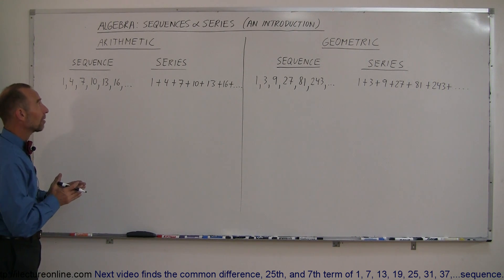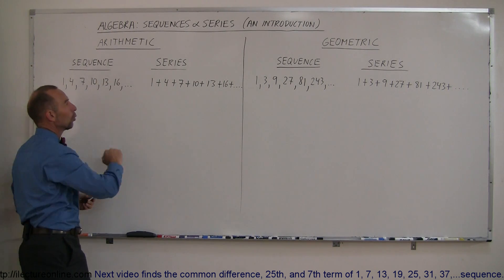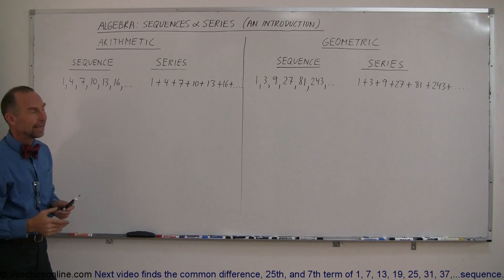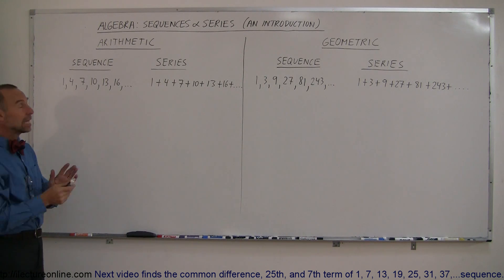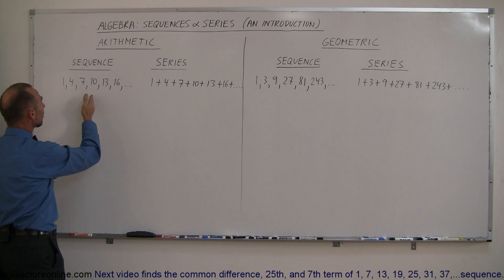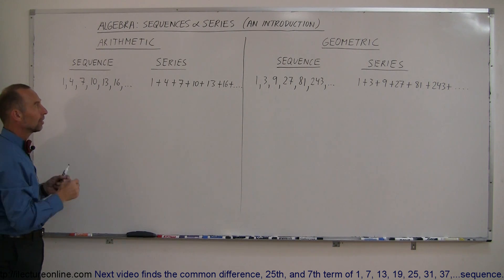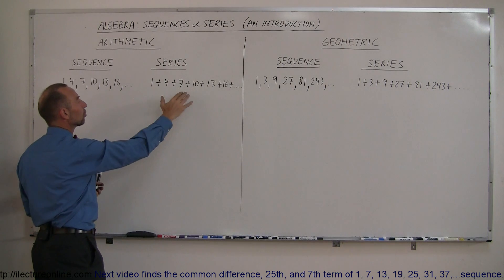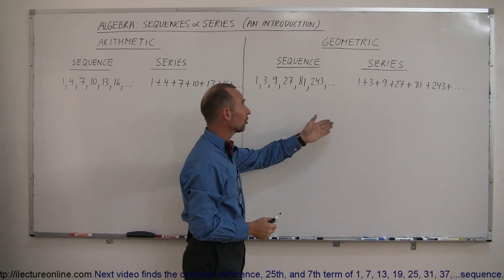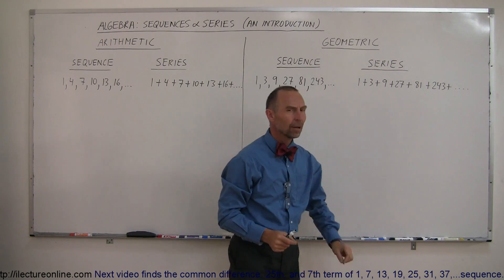First of all, we have two different kinds: we can either have an arithmetic or a geometric sequence or series. The only difference between a sequence and a series is that in a sequence you simply list the numbers with a comma between them, while in a series you add the numbers together.